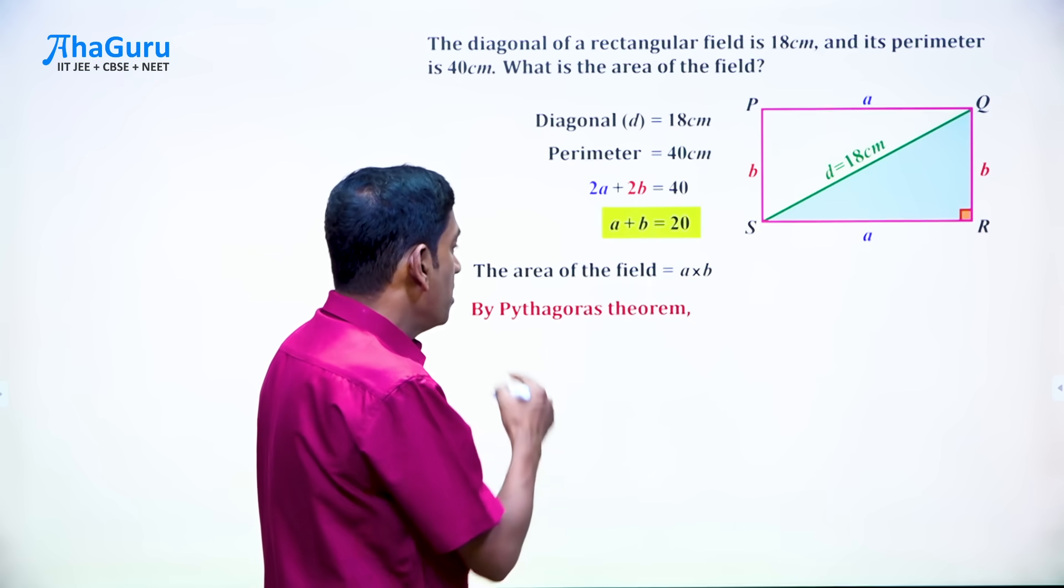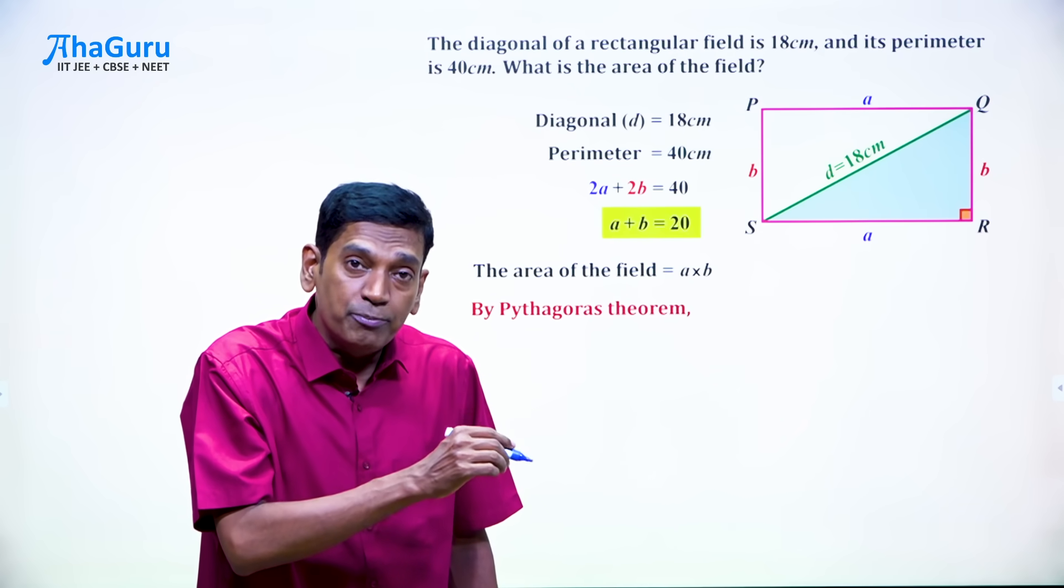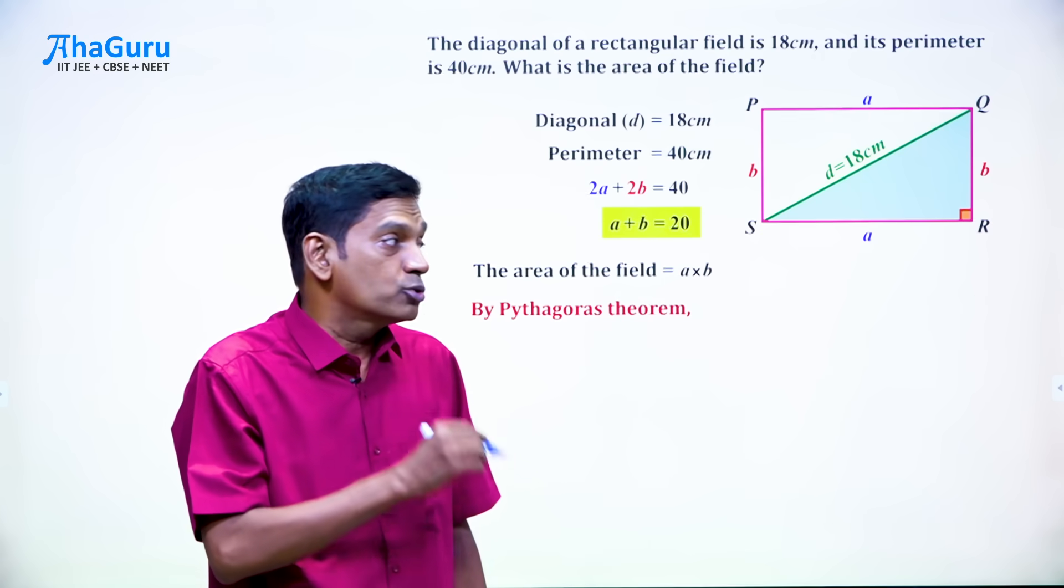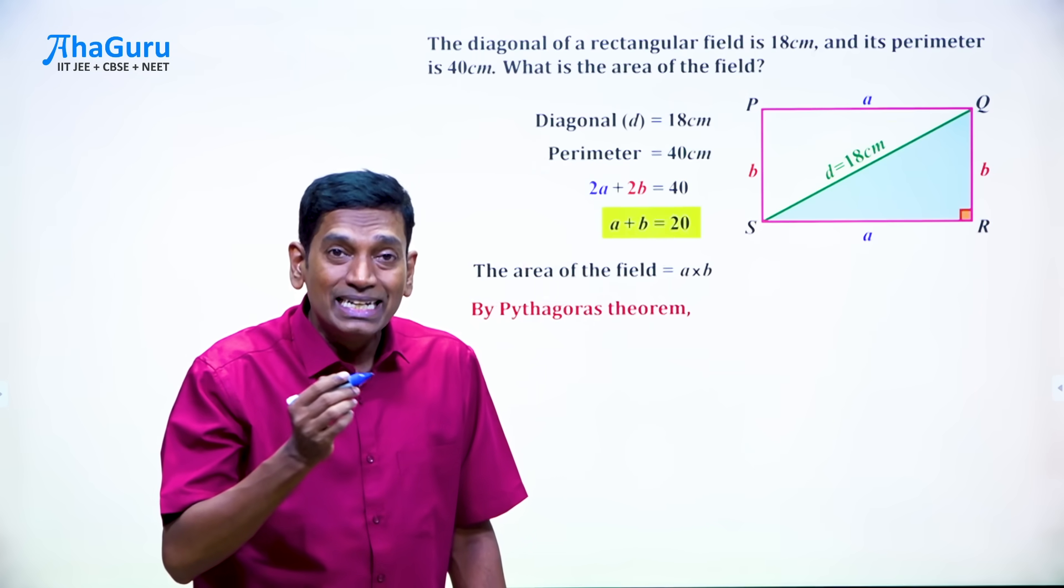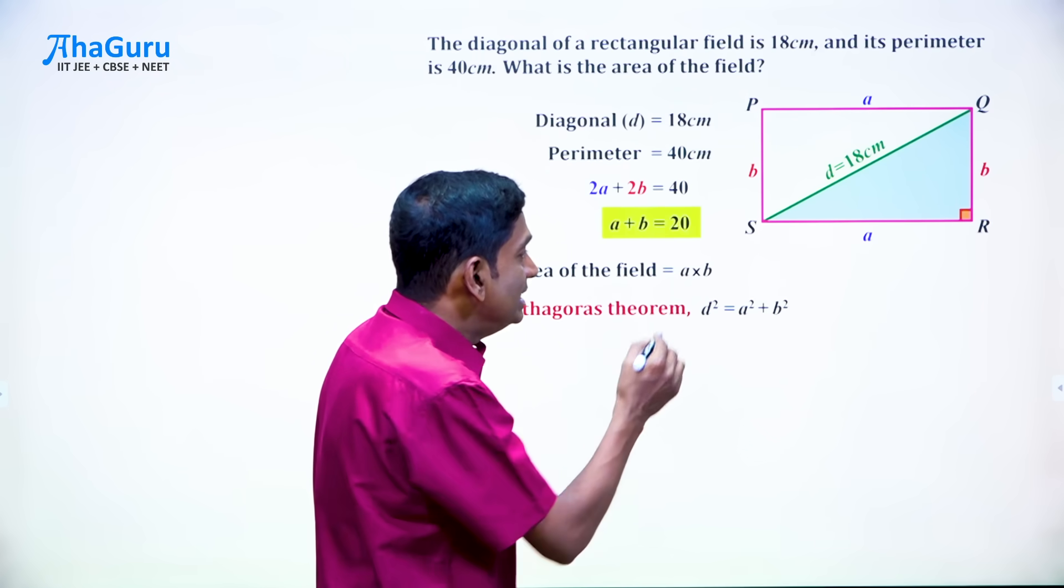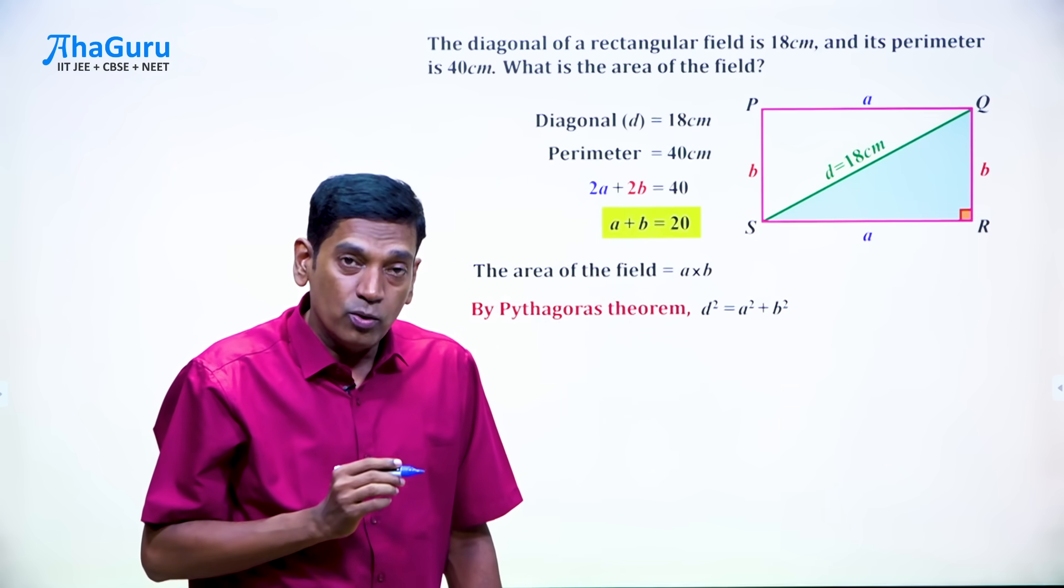Therefore, we can say by Pythagoras theorem, what is the Pythagoras theorem? Square on the hypotenuse is sum of the squares of the other two sides. Here the hypotenuse is QS, which is D. So we can say D square is A square plus B square.